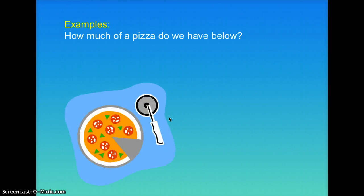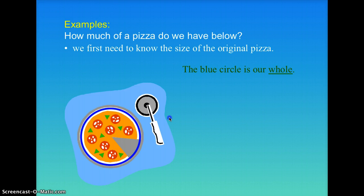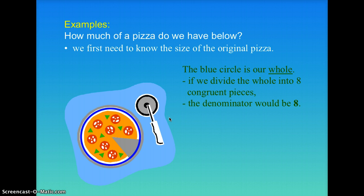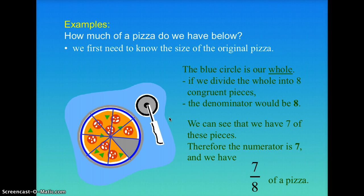So how much of a pizza do we have below? First we have to know the size of the pizza — what the whole was. We divide it into eighths, so the congruent pieces will have a denominator of eight. The numerator would be seven, because it asks how much pizza do we have. So our fraction of the pizza would be seven-eighths, because I have eight pieces that make a whole pizza, and there are seven left.